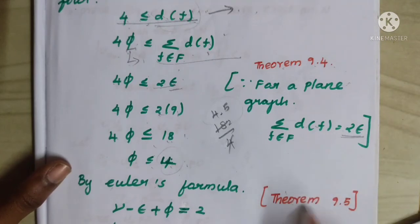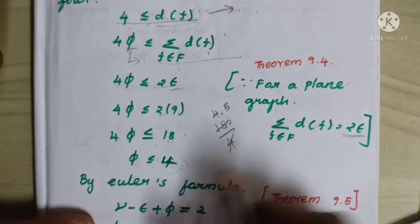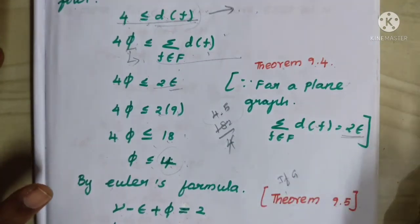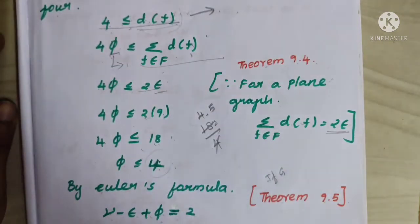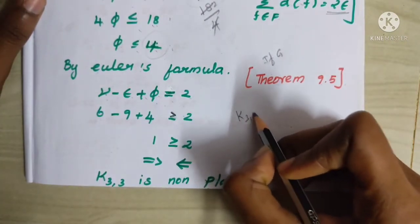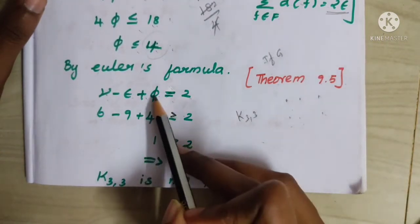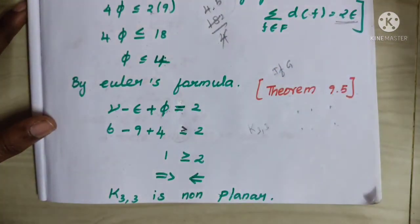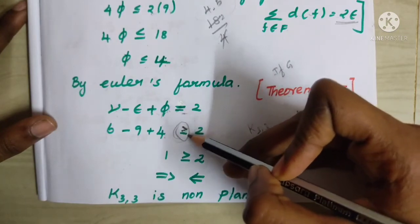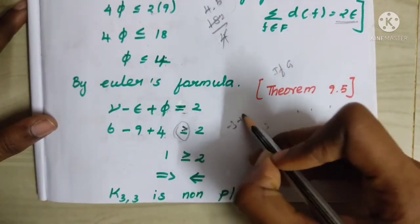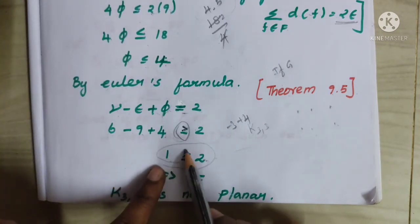By Euler's formula, the number of vertices is 6 (from K3,3: 3+3), the number of edges is 9, and we substitute into v − e + φ = 2. So: 6 − 9 + φ = 2, which gives φ = 5. But we derived φ ≤ 4, and since 5 is not less than or equal to 4, this gives the contradiction: 1 ≥ 2, which is false.